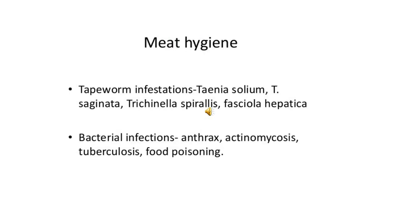The term meat includes various tissues of animal origin. The diseases which may be transmitted by eating unwholesome meat include parasitic manifestations such as Taenia Solium, Taenia Saginata, Trichinella Spiralis, and Fasciola Hepatica.